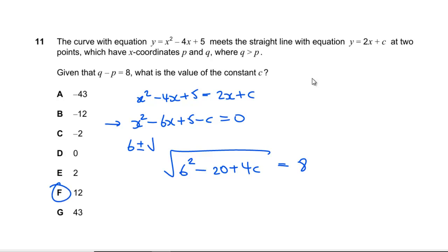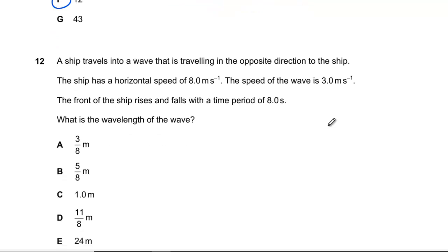Question 12: Ship travels into a wave traveling in the opposite direction. It's got horizontal speed of 8 and the wave is going at 3, so we've got a net velocity of 11 meters per second. Front of the ship rises and falls with a time period of 8 seconds. What is the wavelength? Wavelength is speed multiplied by time period, so it's going to be 88, which is H.